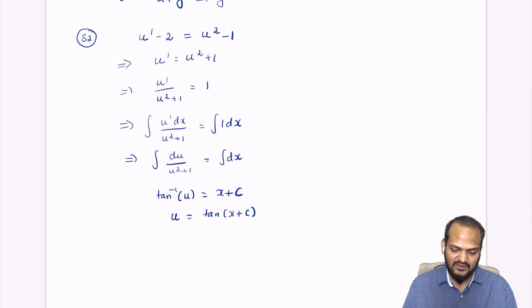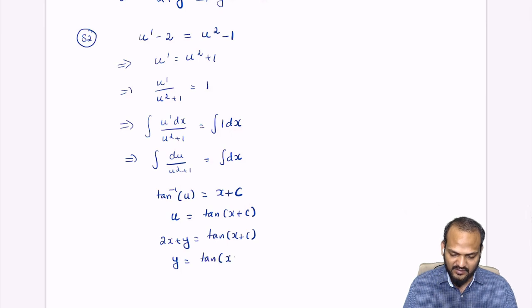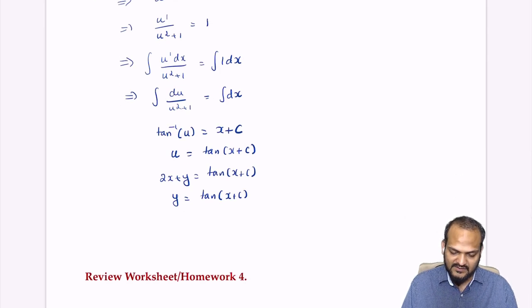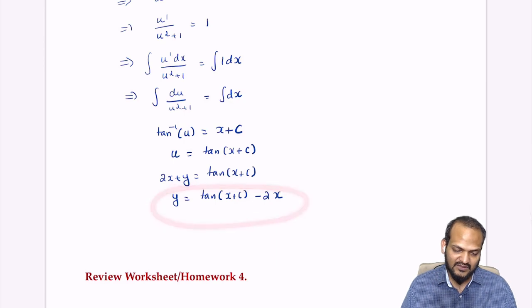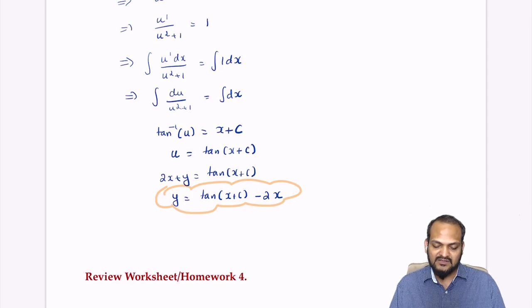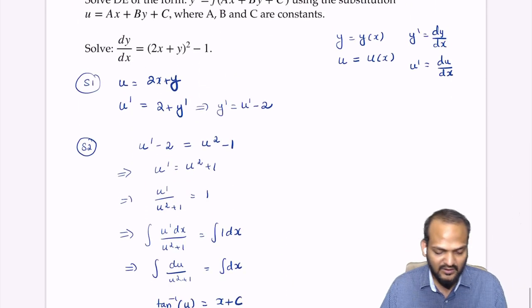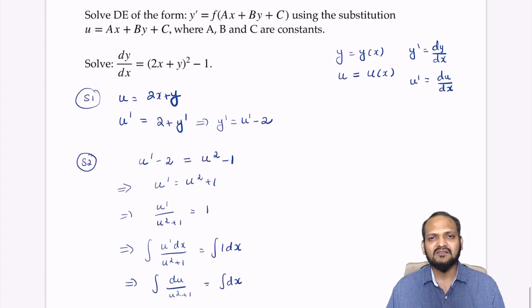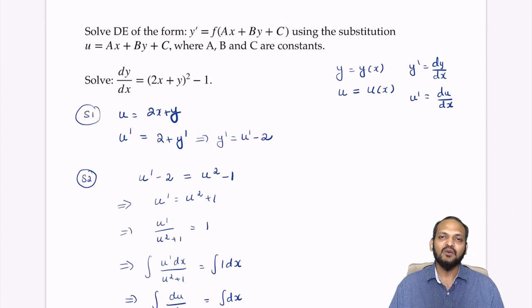Now doing the back-substitution with u equal to 2x plus y, we get 2x plus y is equal to tan of x plus c. Therefore the solution is y is equal to tan of x plus c minus 2x. That's how you solve this differential equation using the substitution method. See you in the next video.